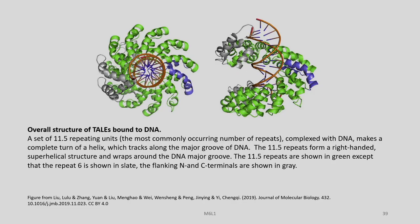How does a TAL effector bind to DNA? These 34 amino acids fall into two hairpin loops forming a hairpin, and in the center the RVDs are located. From the cross-sectional view of the overall structure of TALs bound to DNA, a set of around 11.5 repeating units complexed with DNA makes a complete turn of the helix, which tracks along the major groove of the DNA. The 11.5 repeats form a right-handed super-helical structure and wrap around the DNA major groove.